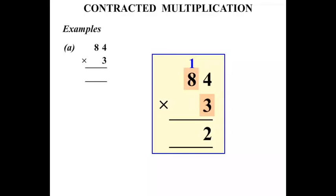3 times 8 is 24 plus the 1 we carried makes 25. And since there's no other calculation to make, we just write the 25 in one go there. So the answer there, 252.